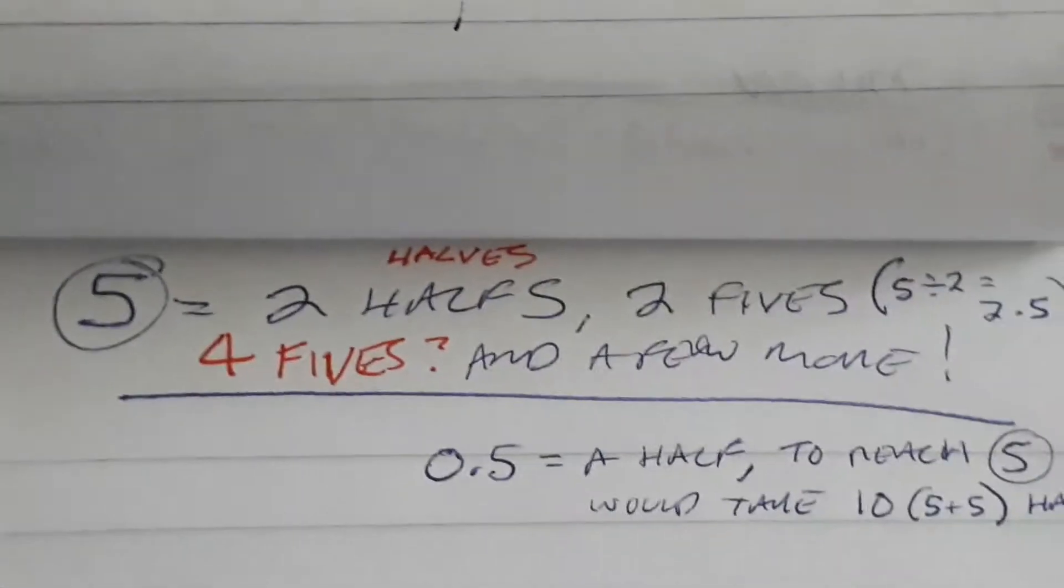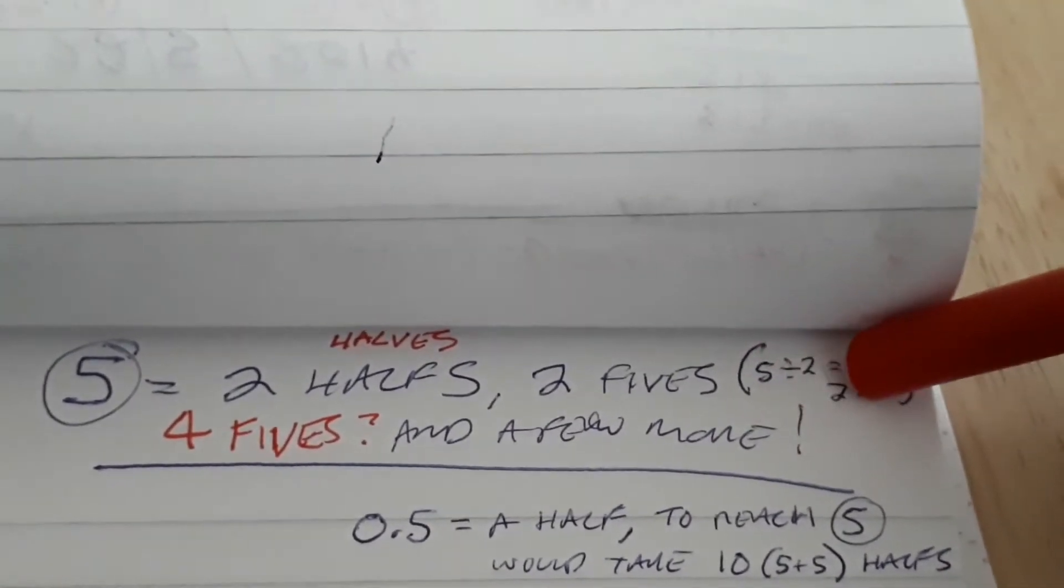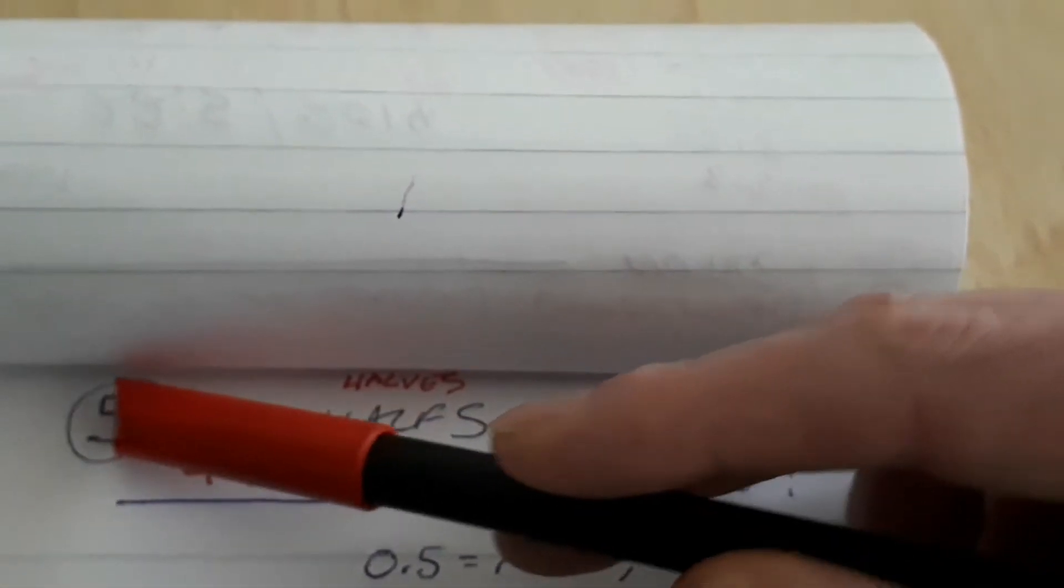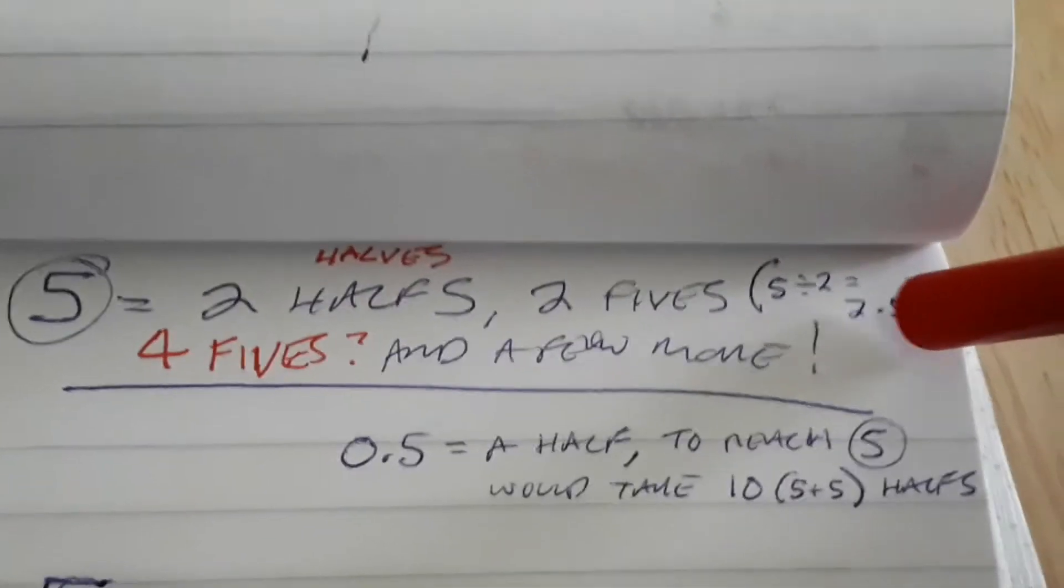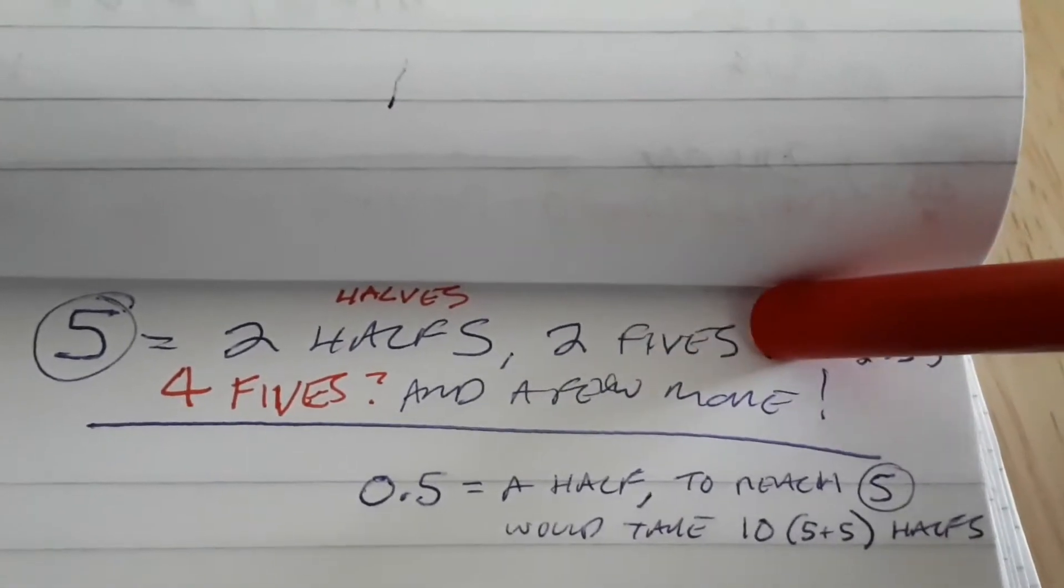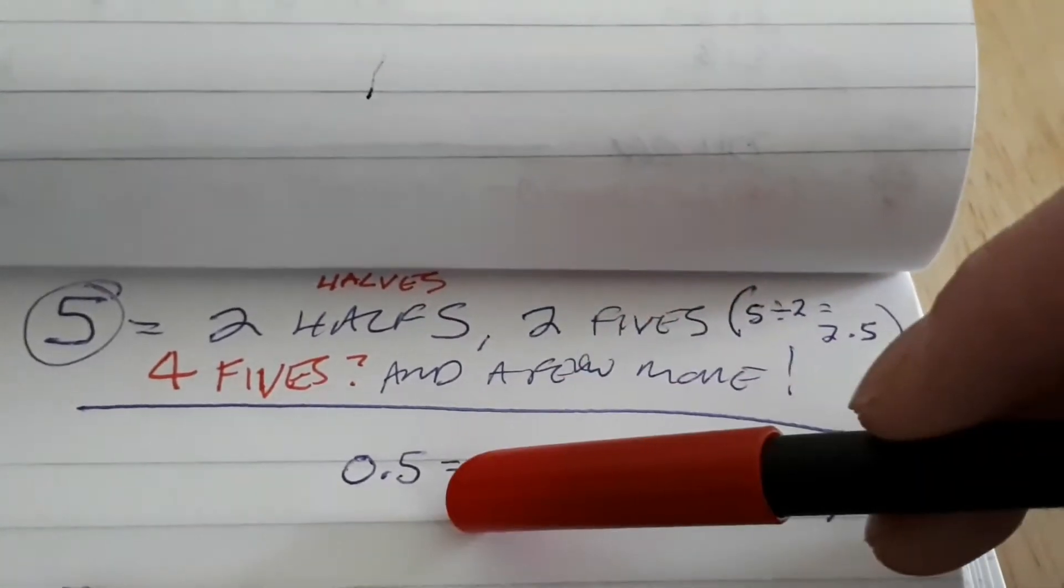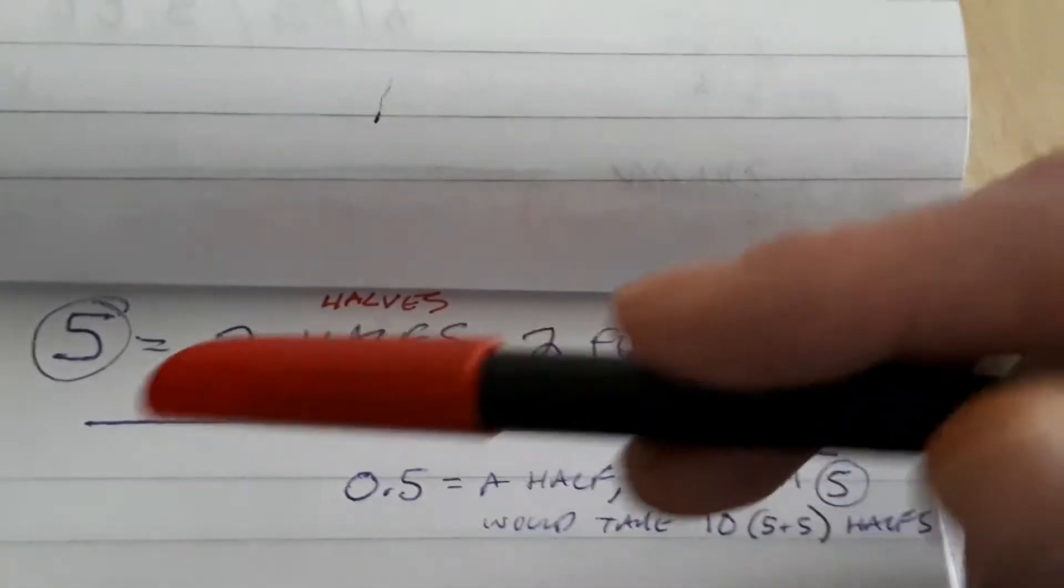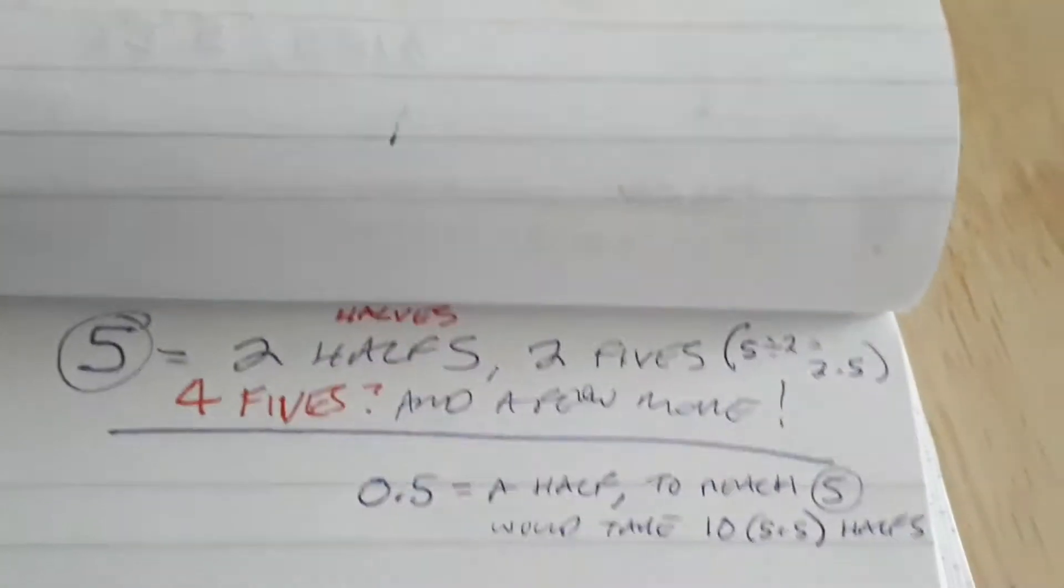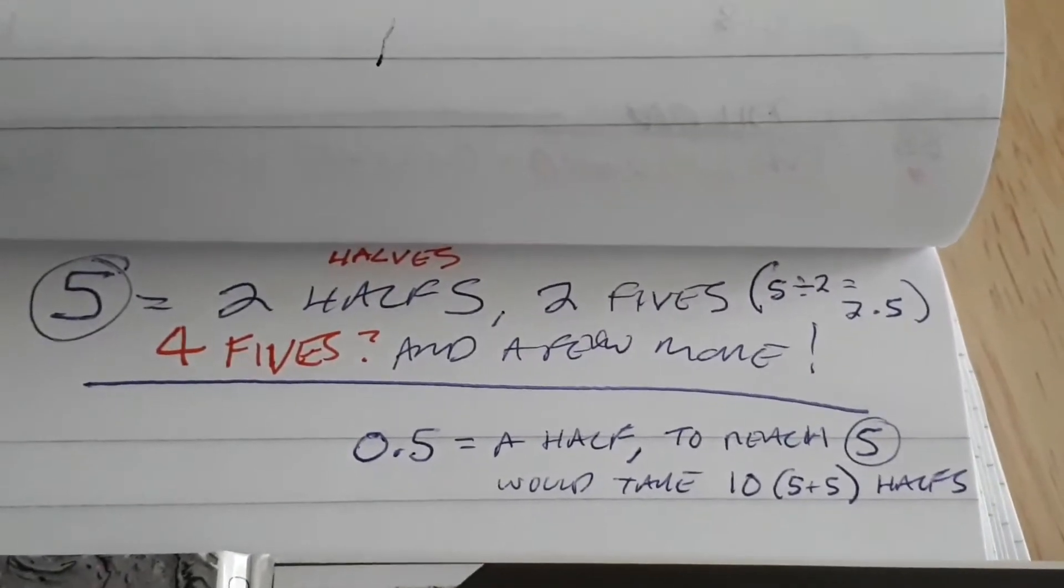I see it as it's actually two fives as well. A simple one first: because I'm talking about it being two halves, if you were to half a five, dividing it in half by two, you get 2.5. So that's two fives. Four fives I'm going to show in a minute. Half being 0.5, to reach back to five from being just a half, you would need ten halves.